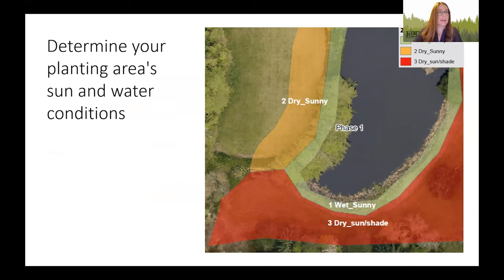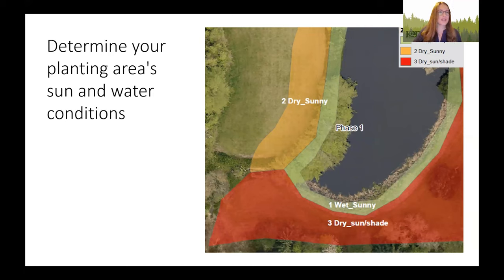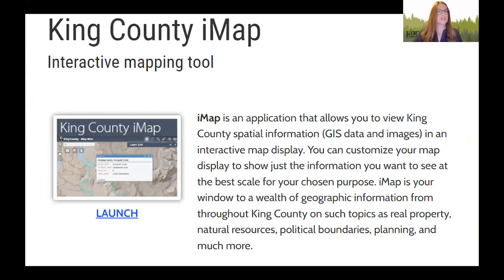Here we've created a site map — something you could create as well. We're trying to determine the zones we're working within. The yellow area is dry and sunny; the orange has some shade and is drier due to trees on the lower edge. Along the water, we expect it to be wet — a mixed area, sometimes filling with water and sometimes draining. You can make a map like this using King County iMap — just type that into Google, find your property, draw shapes, and measure spaces to estimate how many plants you might need.